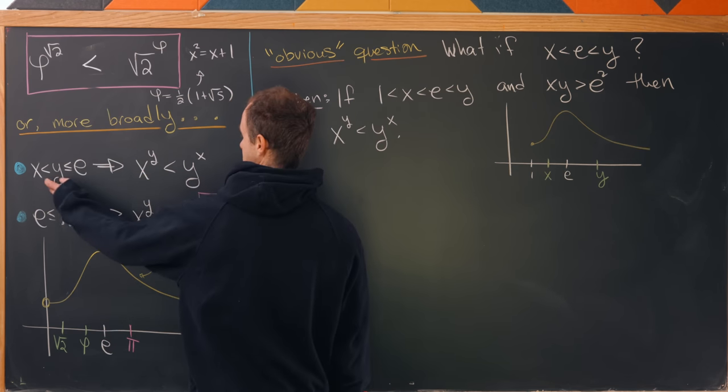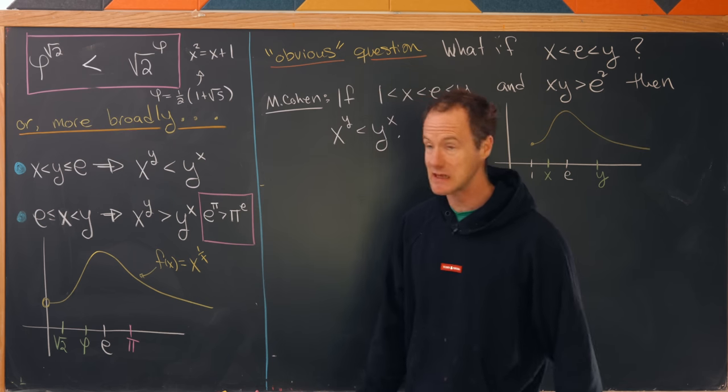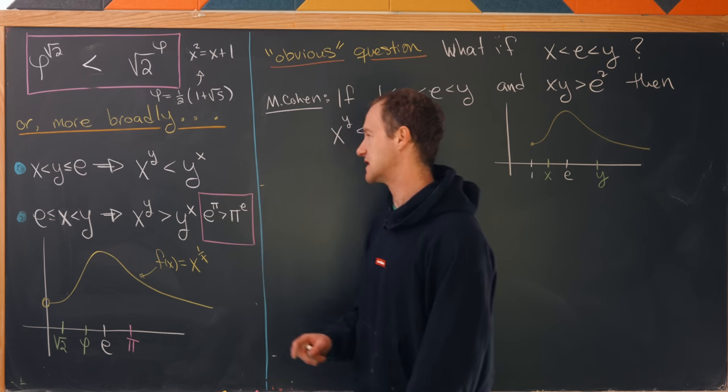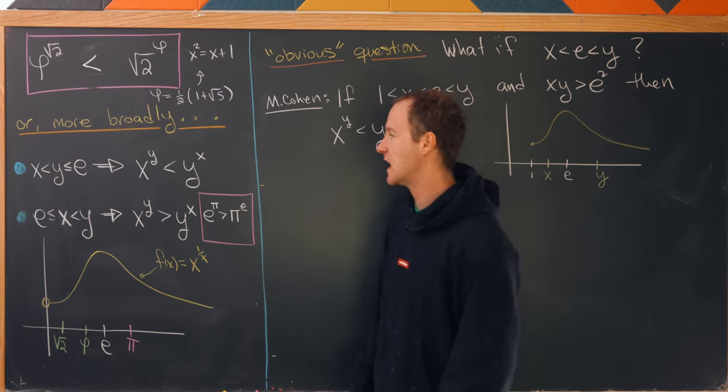That if x is less than y, which is less than or equal to e, then x to the y is less than y to the x. And furthermore, if e is less than or equal to x is less than y,